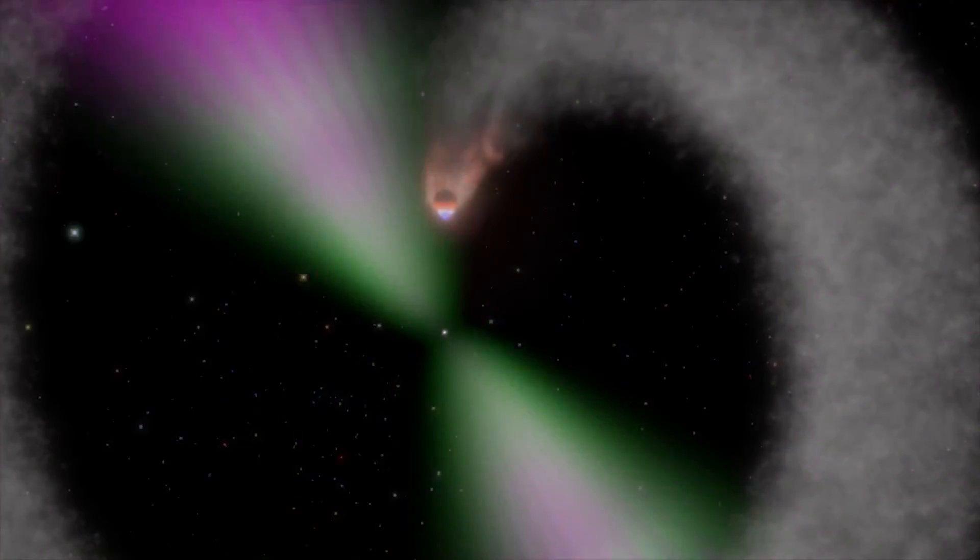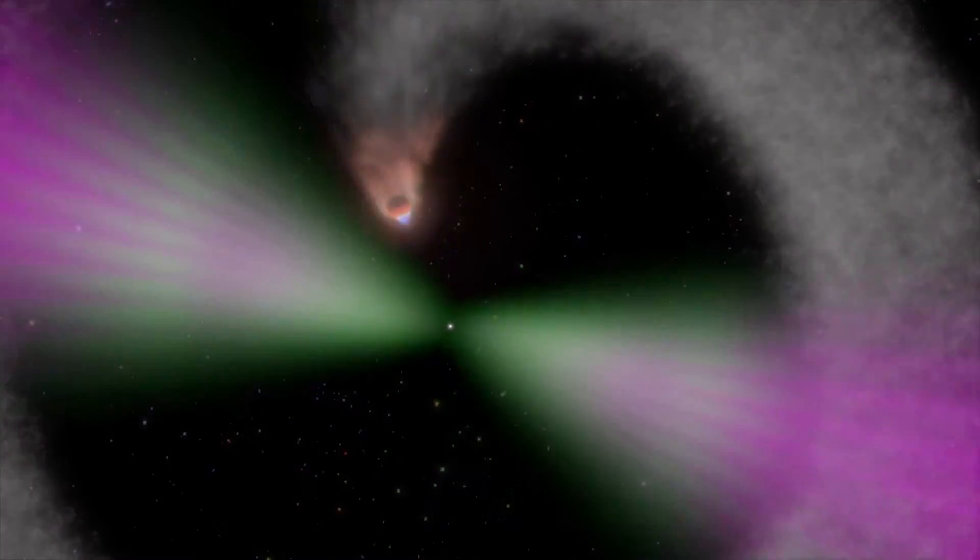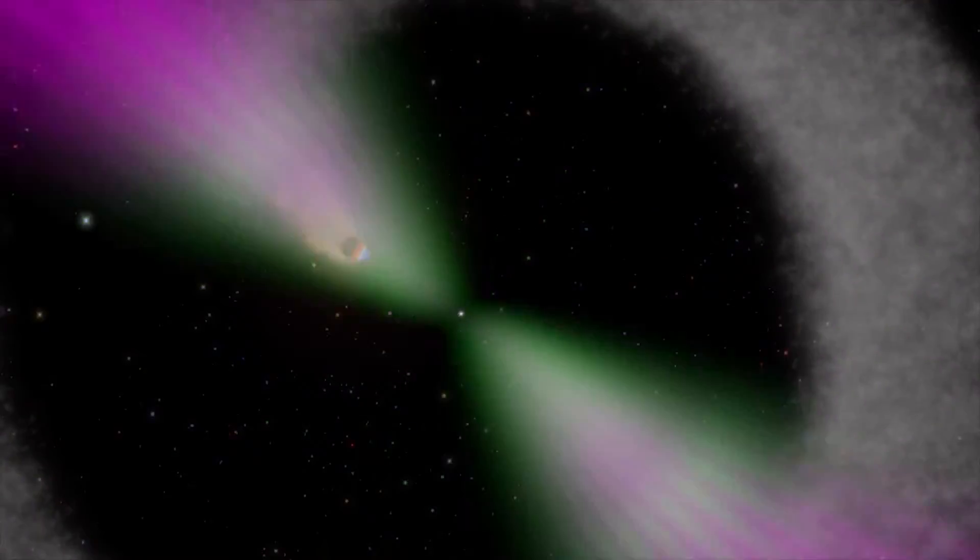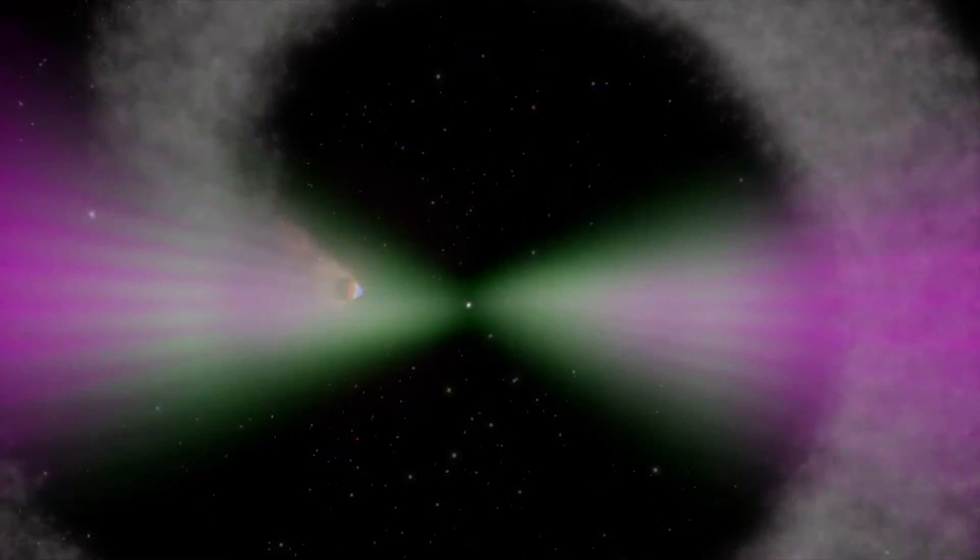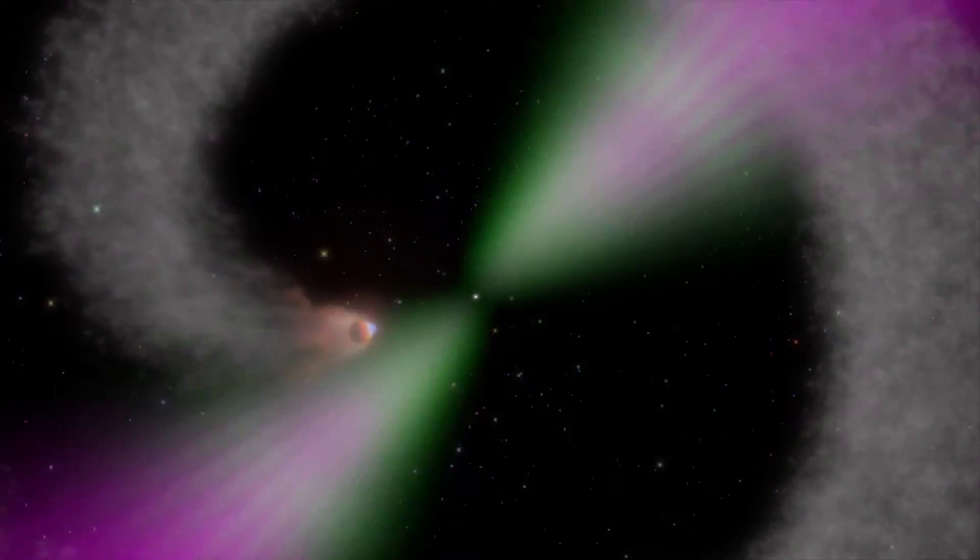Discovered in 2012, J1311 sets the record for the tightest orbit of its class and contains one of the heaviest neutron stars known.